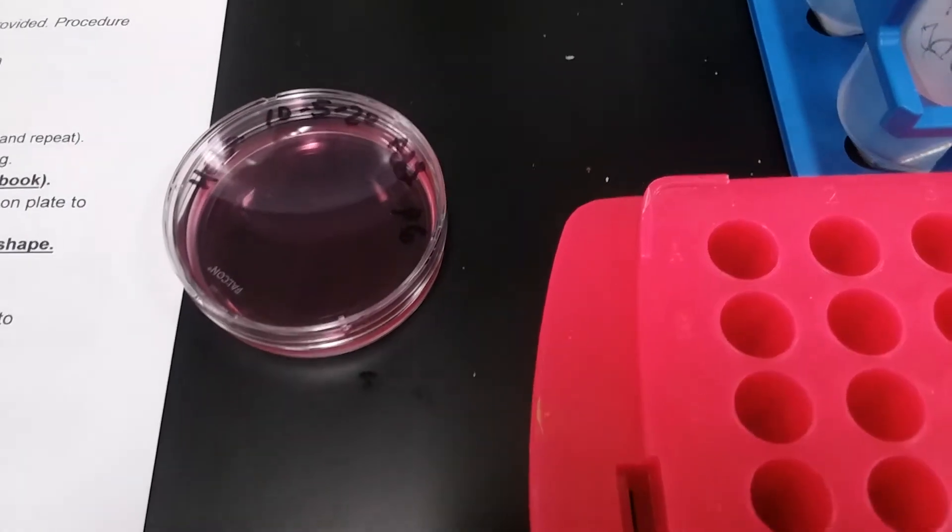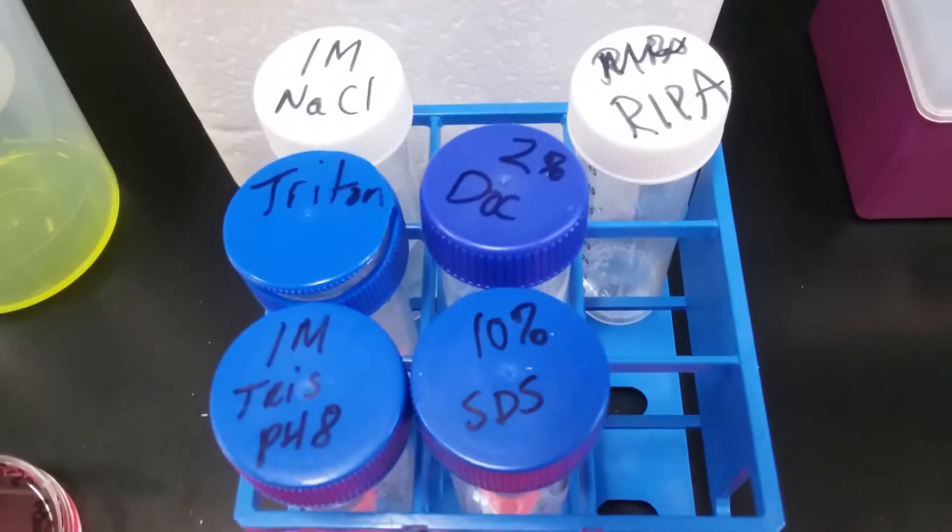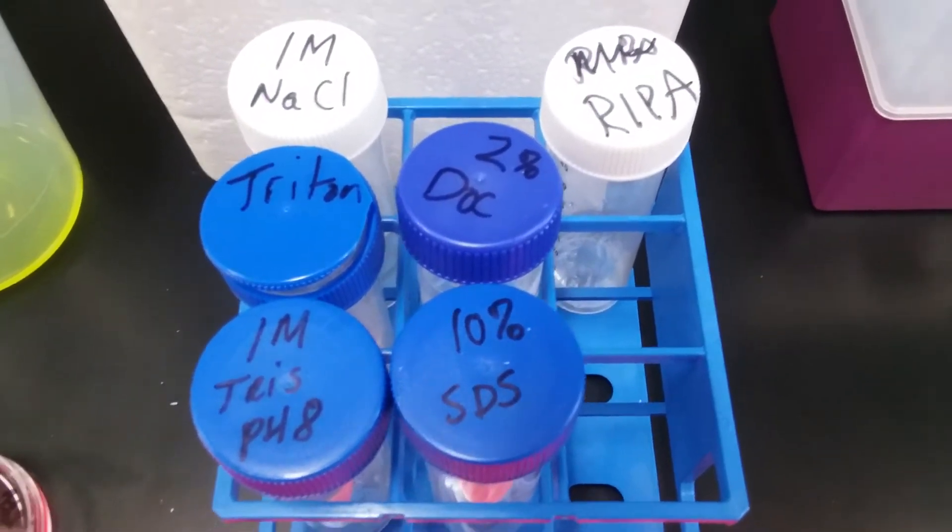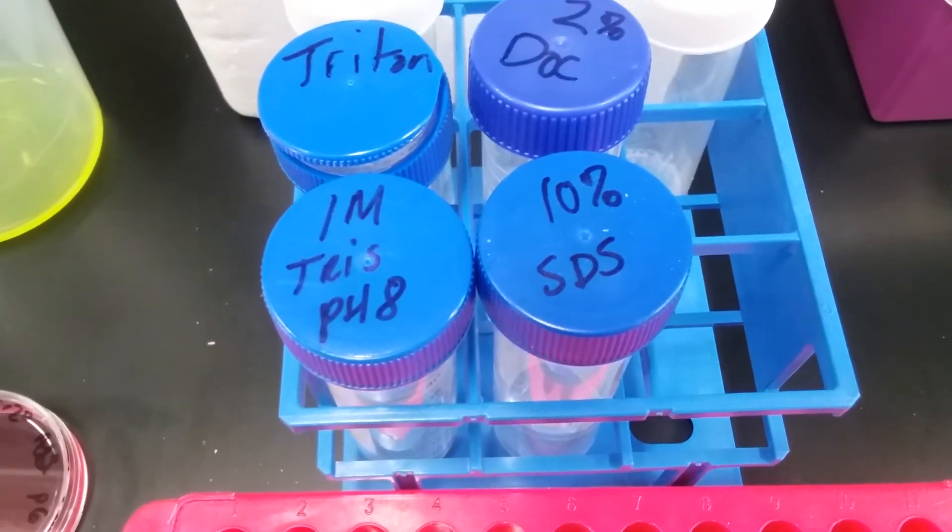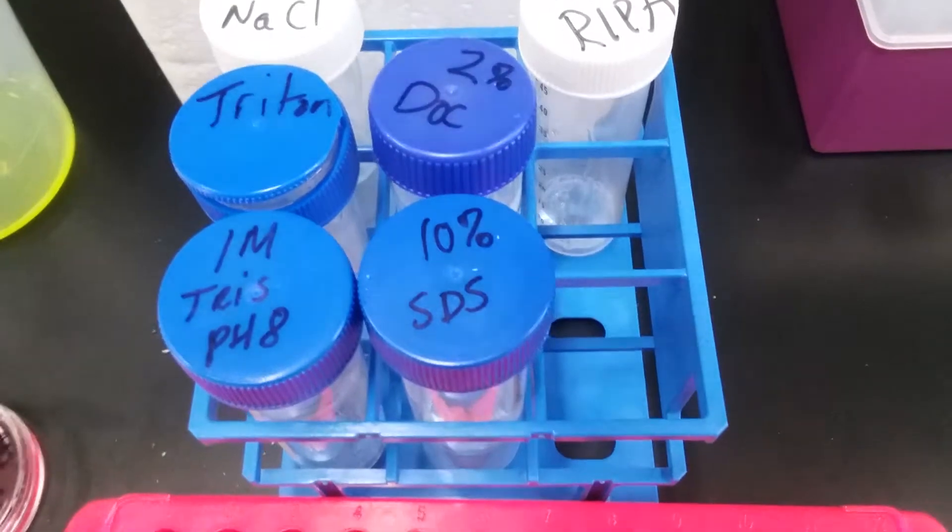We're going to be making a whole cell lysate from our HeLa. In order to accomplish that, we're going to make something called a RIPA buffer using Tris, which is a buffer that'll keep everything in a nice pH of 8, and three detergents.